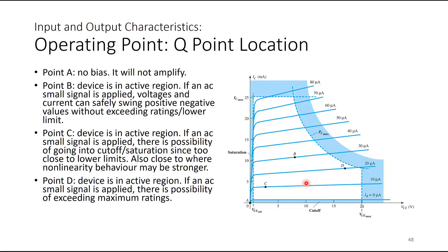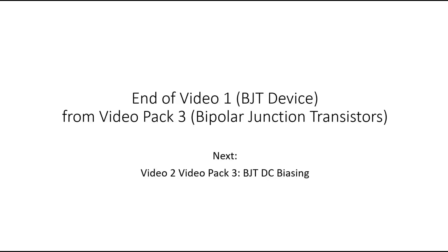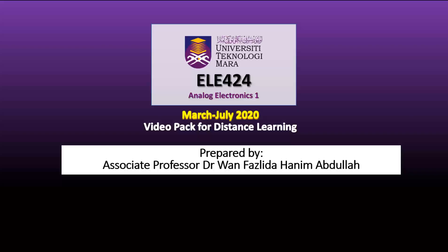We discuss BJT behavior with AC small signals because after covering the BJT device, we will look at how the BJT is biased in a circuit so it can receive an AC small signal and act as an amplifier — amplifying the input signal without distorting it. That will be the last part of BJT covered in BJT AC analysis in EADE 424. Next, we will look at BJT DC biasing in video 2. Thank you. Assalamualaikum.